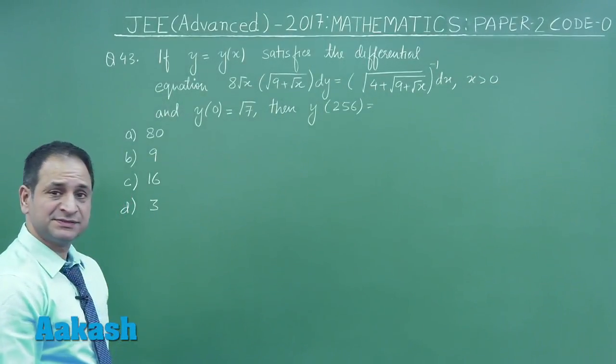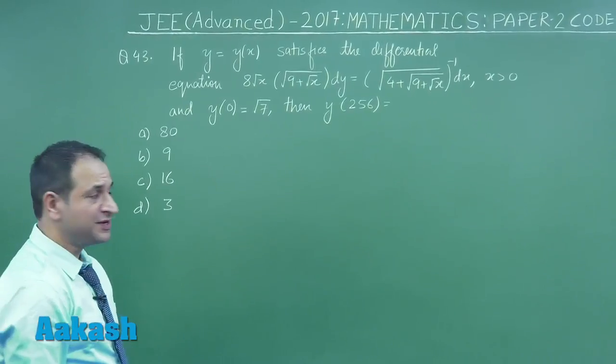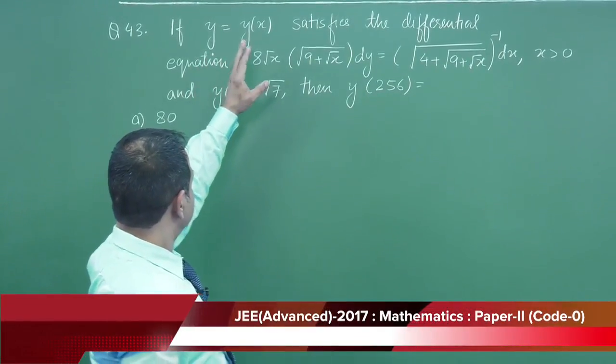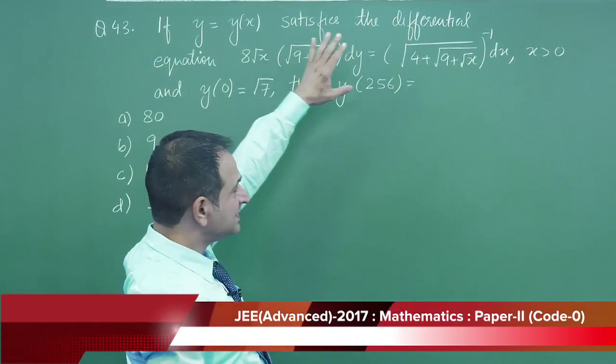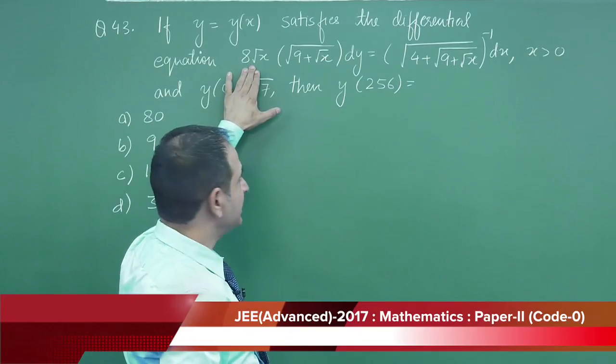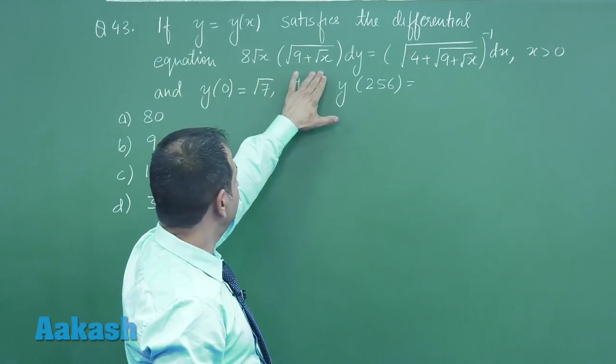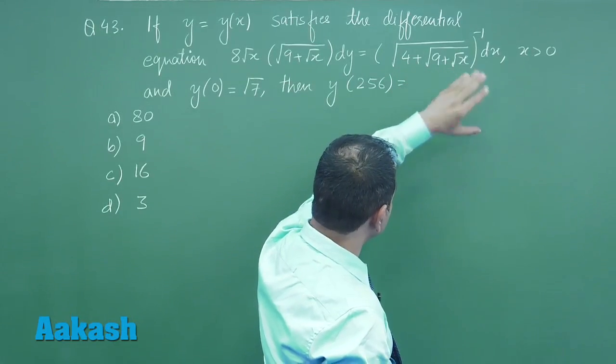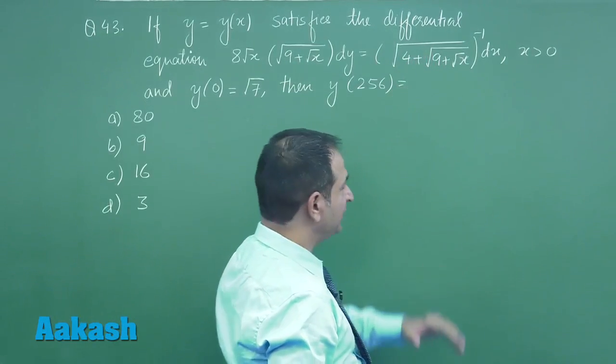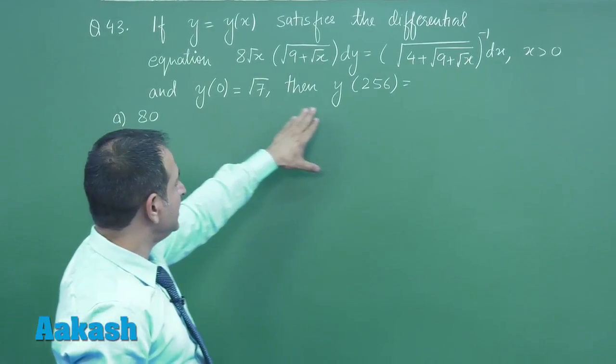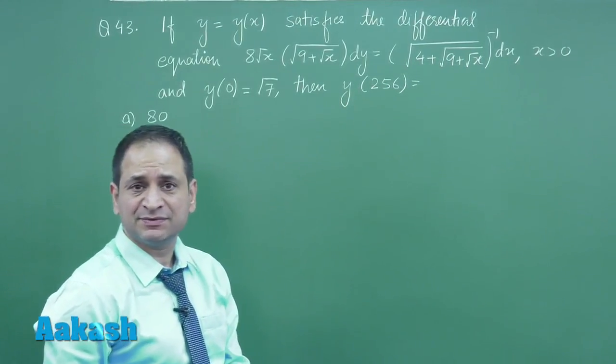Now, let us move on to the next problem which is connected to the differential equation. If y is a function of x satisfies the differential equation 8√x√(9+√x)dy = √(4+√(9+√x))dx and y(0) = √7, then y(256) is equal to what.